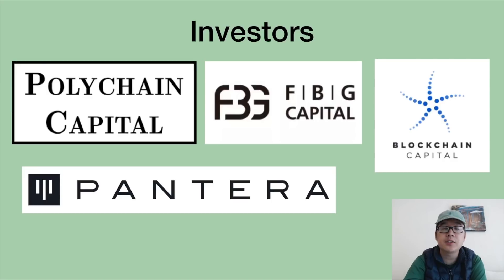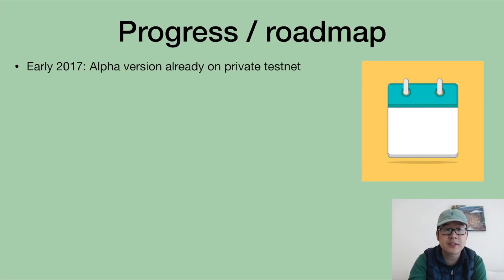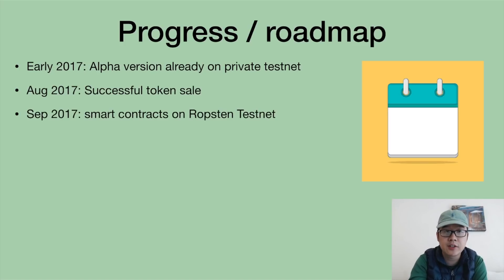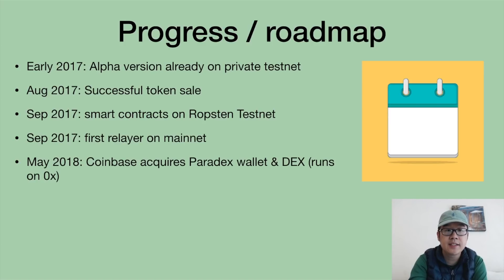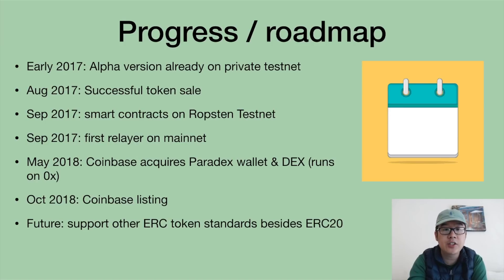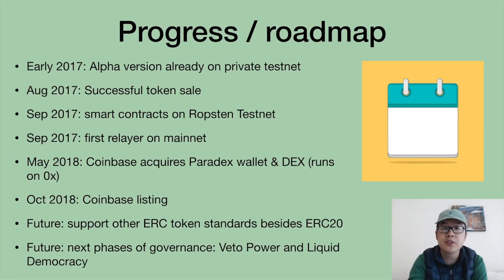They have major investors including Polychain, FBG, Blockchain Capital, and Pantera. In terms of progress and roadmap: in early 2017 they released an alpha on a private testnet, followed by a successful token sale, smart contracts on the Ropsten testnet, the first relayer on mainnet, and Coinbase acquiring Paradex — a wallet and DEX running on the 0x protocol, listed on Coinbase just recently. In the future they want to support other ERC token standards beyond ERC-20, as well as new phases of governance.